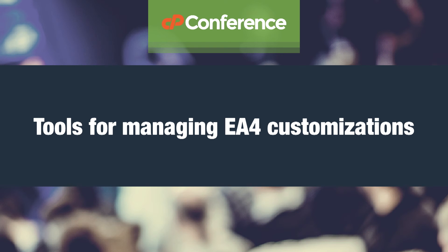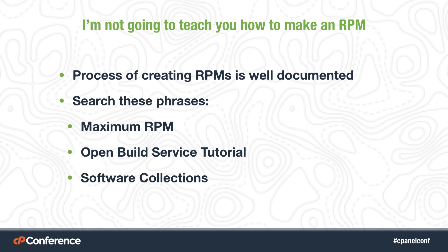Now we're going to talk about some tools for managing EA4 customizations. I'm not going to teach you how to build an RPM — the process is very well documented. I highly suggest looking at the book Maximum RPM, which is freely available on the internet — this is kind of the RPM Bible and has been around for about 15 years. I also suggest looking at the OpenBuild Service tutorial, which is a tool we've been using here at cPanel for the past year. And if you look up Software Collections, you'll find some very good tutorials on how to build RPMs for Software Collections.